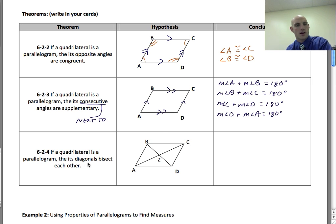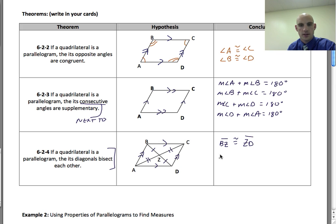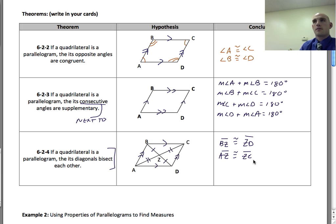If a quadrilateral is a parallelogram, then its diagonals bisect one another. There are a lot of marks that go into these parallelograms, but if you keep track of what each theorem is talking about, we can draw great conclusions. This means BZ is congruent to ZD, and AZ is congruent to ZC.